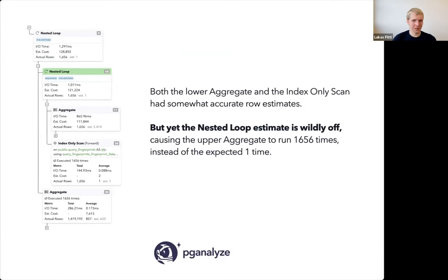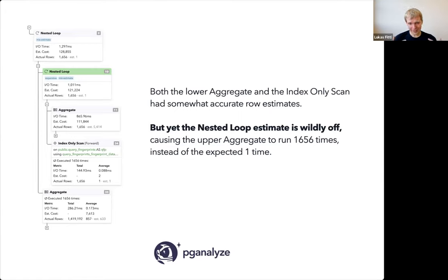This is not just academic — it actually happens a lot in practice. In this example, you can see two nested loops. The inner nested loop has an aggregate and an index scan, both of which have roughly correct estimates. But the nested loop on top estimated one row and actually got 1600 rows. The outer nested loop on top of that expected to execute the inner portion one time but actually executed it 1600 times, suddenly making it a lot more expensive.